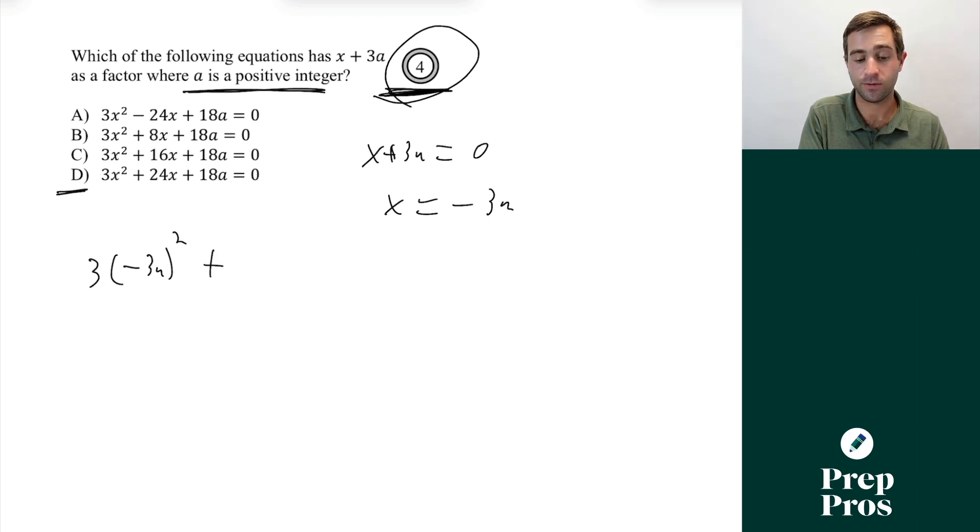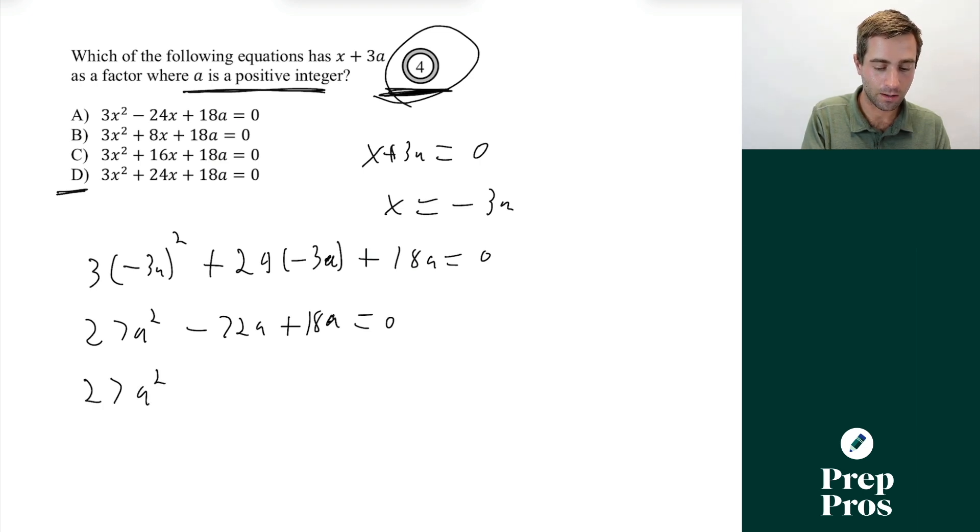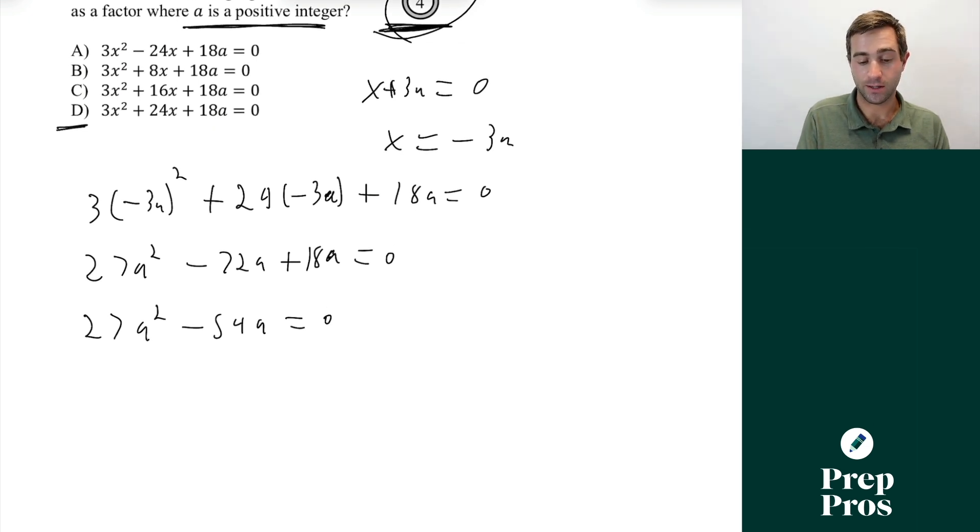So we'll do 3(-3a)^2 + 24(-3a) + 18a, and we'll set this all equal to zero. So as we go through, this is going to give us 3 times 9a^2. So this will leave us with 27a^2 - 72a + 18a = 0. So now we can simplify further. This is now going to be 27a^2 - 54a = 0.